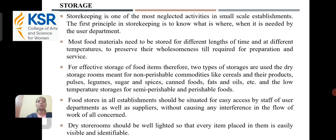Storage: Storekeeping is one of the most neglected activities in small-scale establishments. The first principle in storekeeping is to know what is where when it is needed by the user department. Most food materials need to be stored for different lengths of time and at different temperatures to preserve their wholesomeness until required for preparation and service. For effective storage of food items, two types of storage are used.